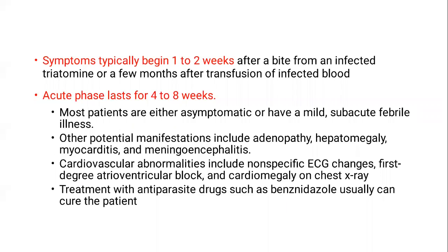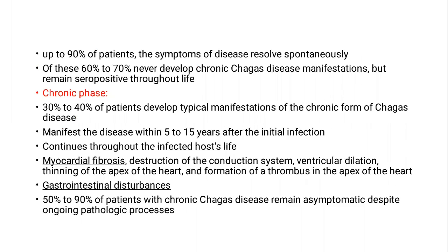The clinical presentation of Chagas disease is very characteristic. Symptoms typically begin one to two weeks after a bite from an infected triatomine bug, or a few months following blood transfusion. The acute phase lasts for one to two months. Most patients are asymptomatic. If the patient develops cardiovascular manifestation, it is usually non-specific ECG changes, first-degree AV block, or cardiomegaly on chest X-ray. The most common ECG abnormality is right bundle branch block. Treatment during this phase leads to cure. Very long time can pass before chronic symptoms appear.